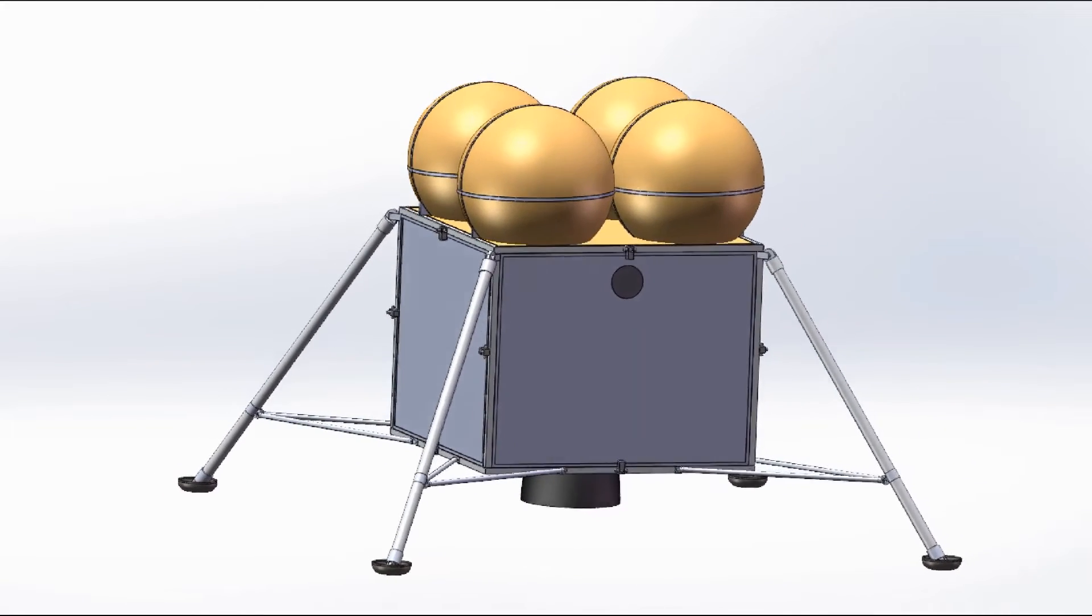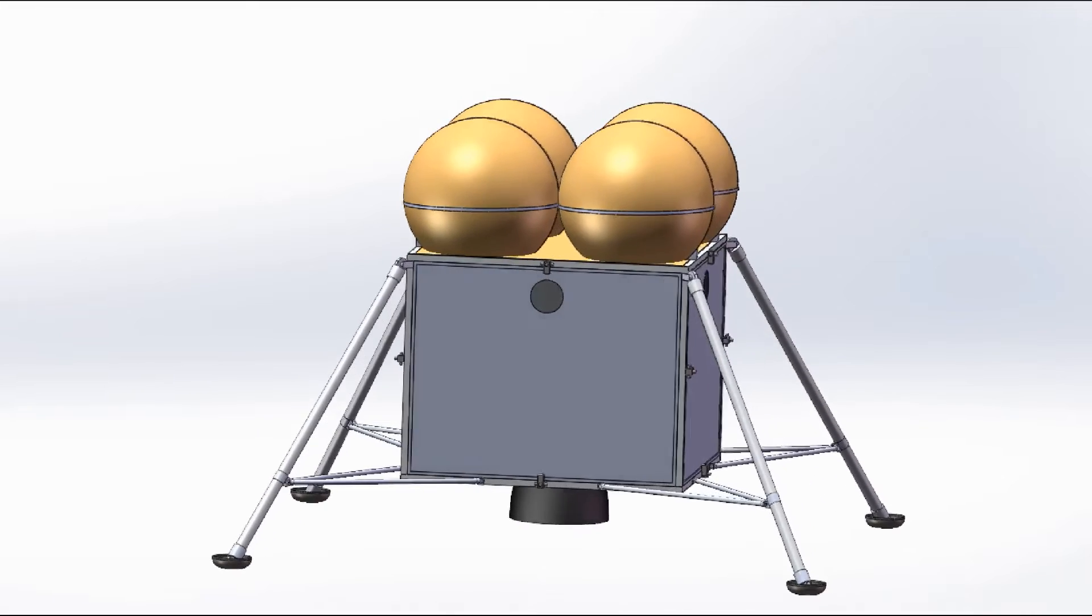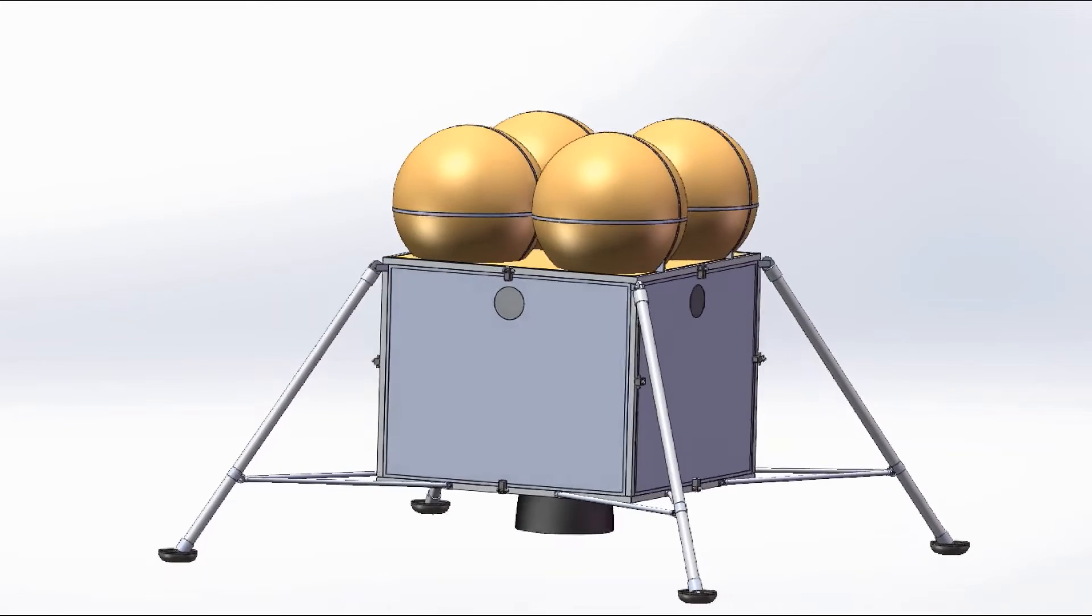Carrying a 200-kilogram payload, Aviona is designed to make a round-trip within a 300-kilometer radius of Shackleton Crater Station.